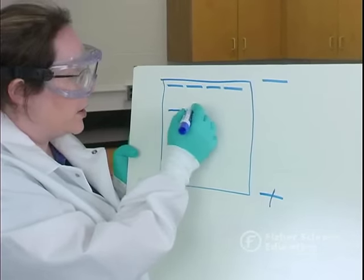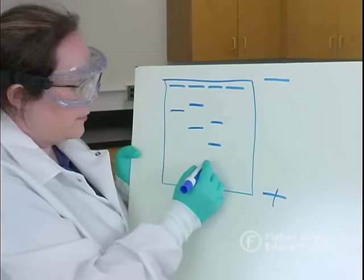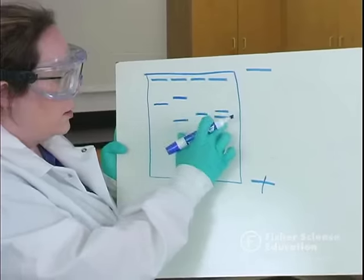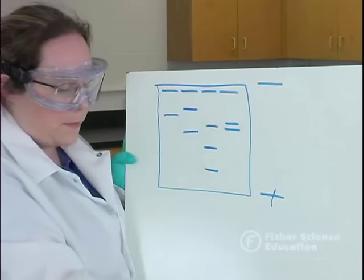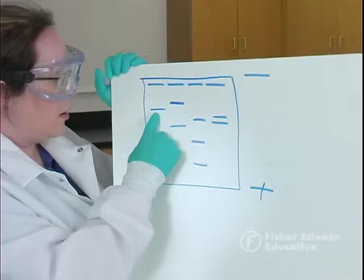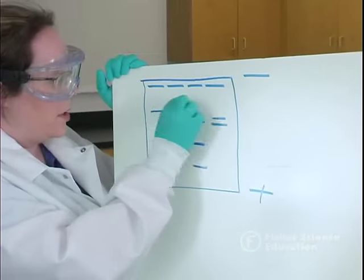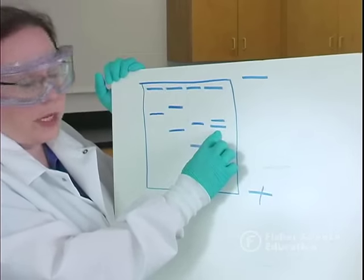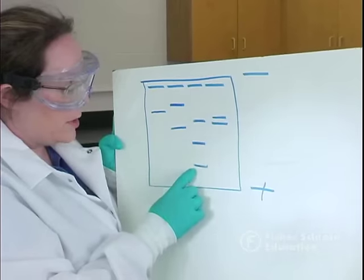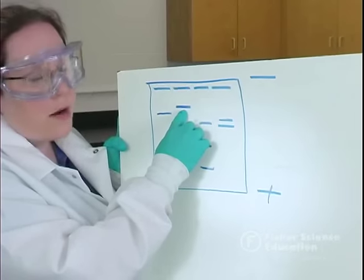You may end up with something that looks like this. Each of these lines represents a band of DNA. All the pieces of DNA in a band are the same size. Everything at the same distance traveled is the same size. Even though we have two different samples, these fragments here are approximately the same size. The smallest fragments are going to move the farthest, and the largest fragments are not going to travel as far.